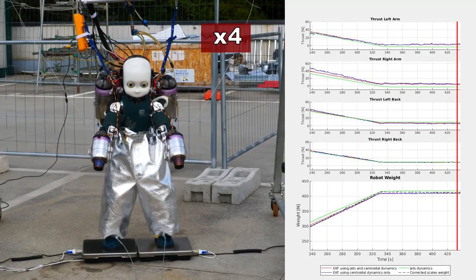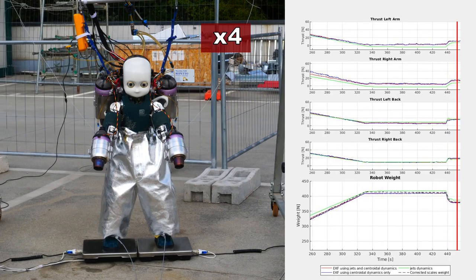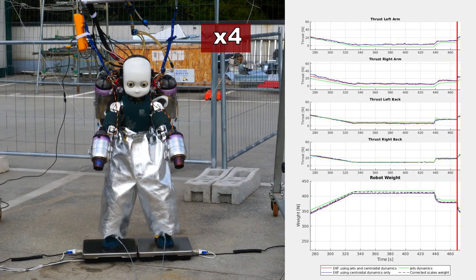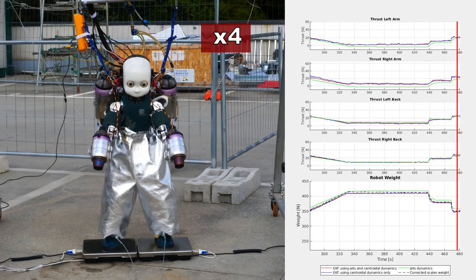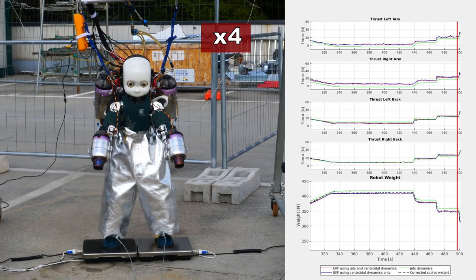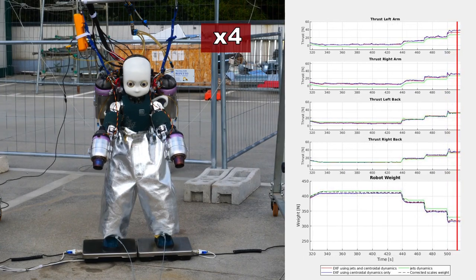The plots show the individual thrust intensities on top and the robot weight at the bottom. We compare the corrected weight measurement by the scales with the equivalent weight computed by the estimated thrust intensities. We show the estimates from the two estimators versions explained in the simulation part, in addition to the predicted jet's dynamics from the input throttle commands.